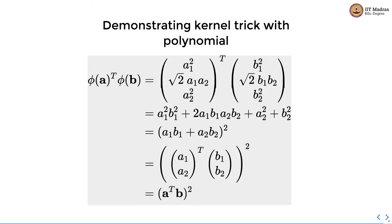Let us understand the kernel trick with a concrete example using a polynomial transformation. We have two feature vectors a and b. First, we calculate the polynomial transformations of the individual vectors and then perform the dot product in the transform space. By transforming a with the second order polynomial we get a1 squared, square root of 2 times a1 a2, and a2 squared. Similarly for b, we get b1 squared, square root of 2 times b1 b2, and b2 squared. When we perform the vector-vector multiplication we get a1 squared times b1 squared, plus 2 times a1 b1 a2 b2, plus a2 squared b2 squared.